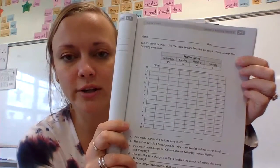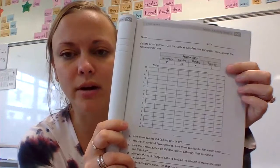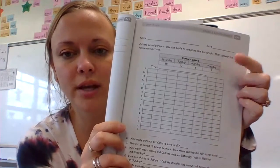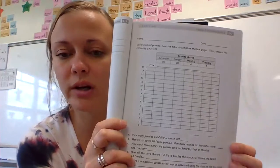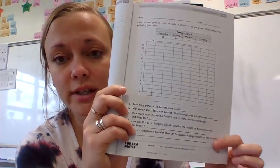So up here at the top is all your directions. Use the table to complete the bar graph. Here's your table. Pennies saved. You need to go and fill in your bar graph just like we've been working on and then answer these questions.